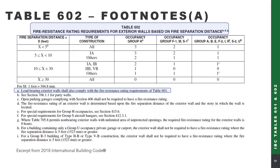Let's discuss the footnotes in Table 602. Footnote A states that load-bearing exterior walls shall also comply with the fire resistance rating requirements of Table 601. So even if you don't need a fire-resistant rating on the outside of the wall based on Table 602, you're still going to have to follow the guidelines in Table 601 for load-bearing exterior walls.